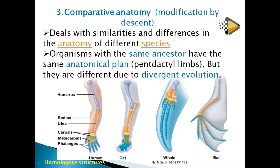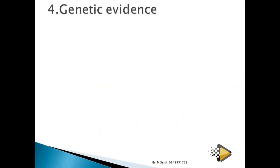So comparative anatomy shows that all vertebrates share a common ancestor but moved to different environments and modified accordingly. If organisms share almost the same structure, it also suggests they share a similar environment.